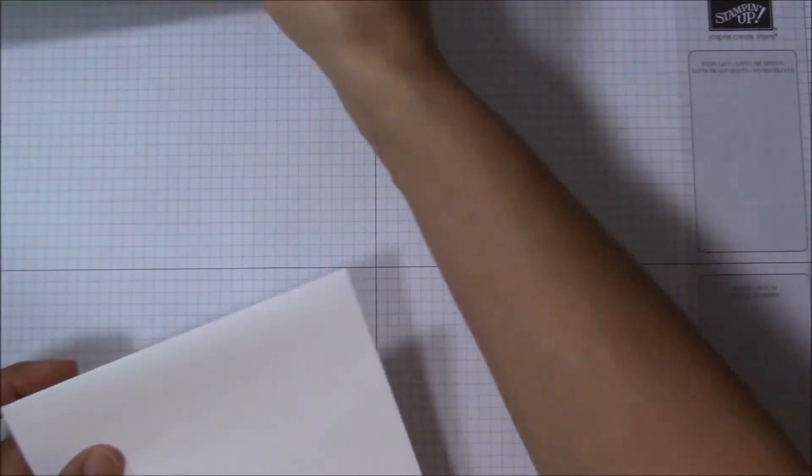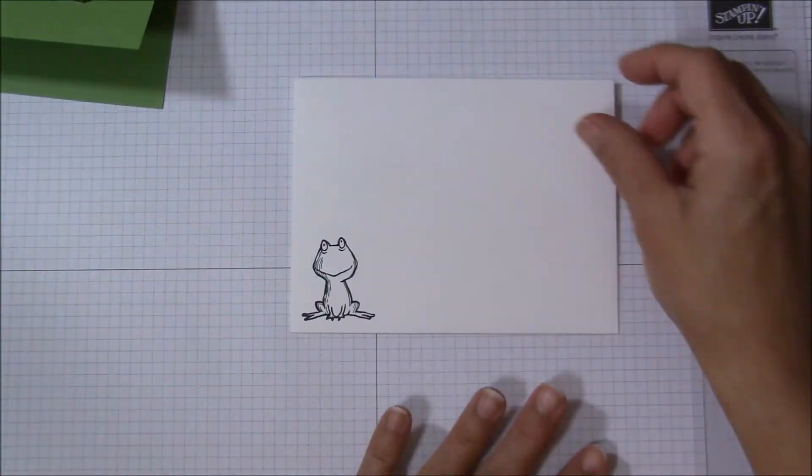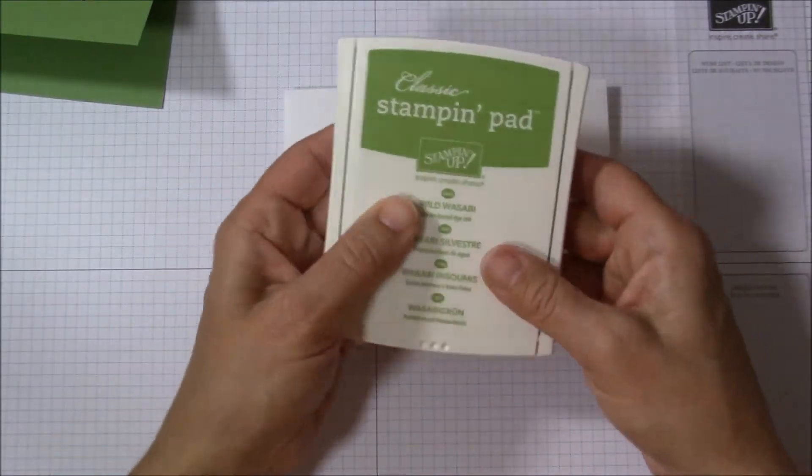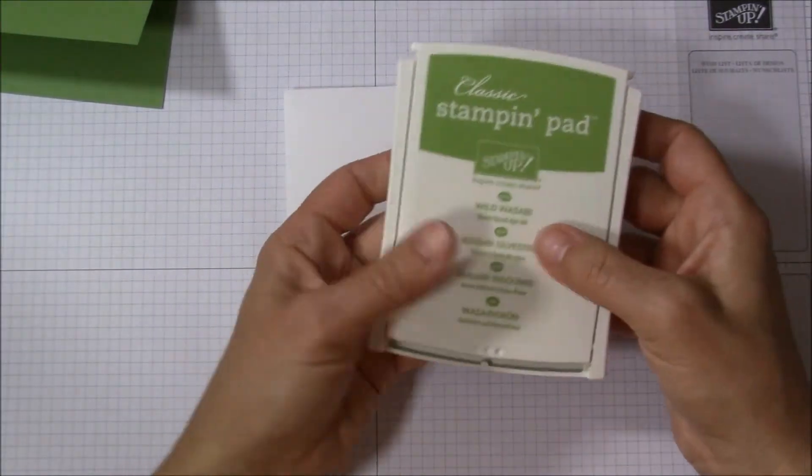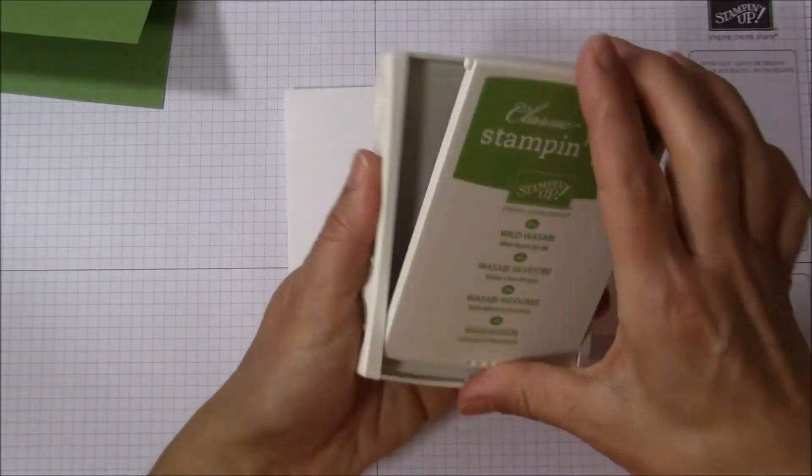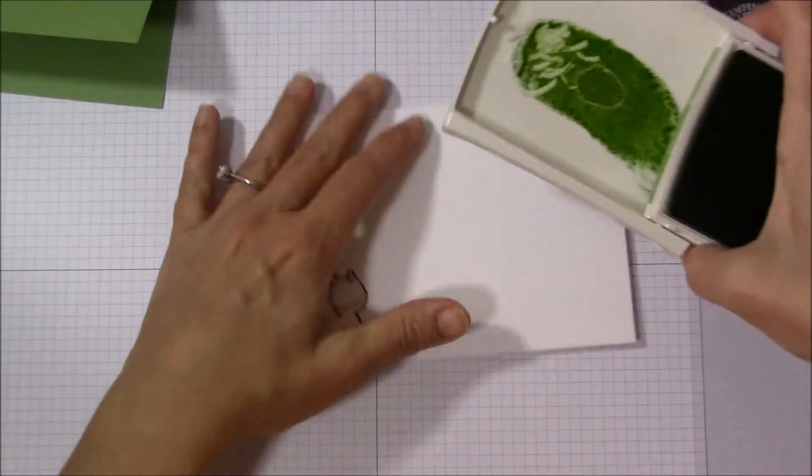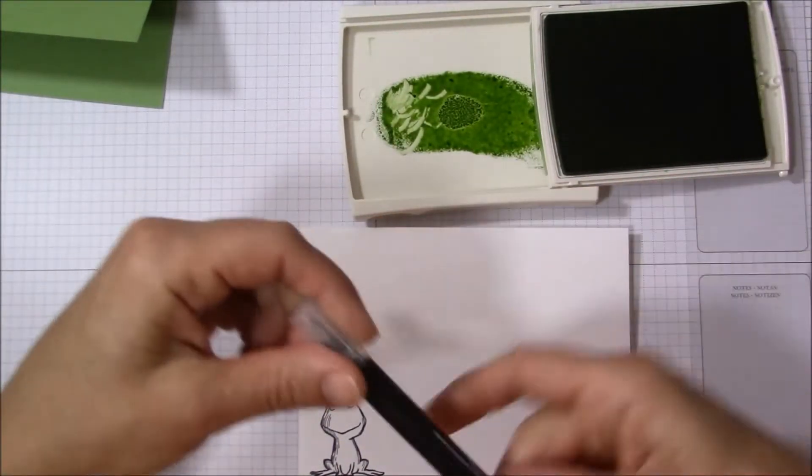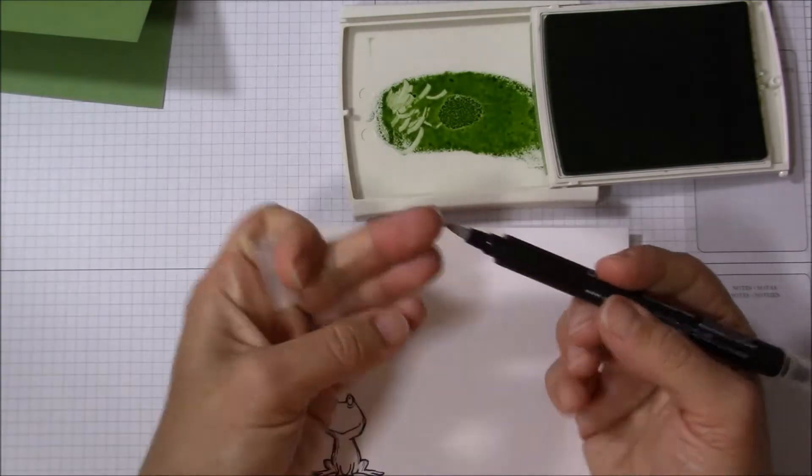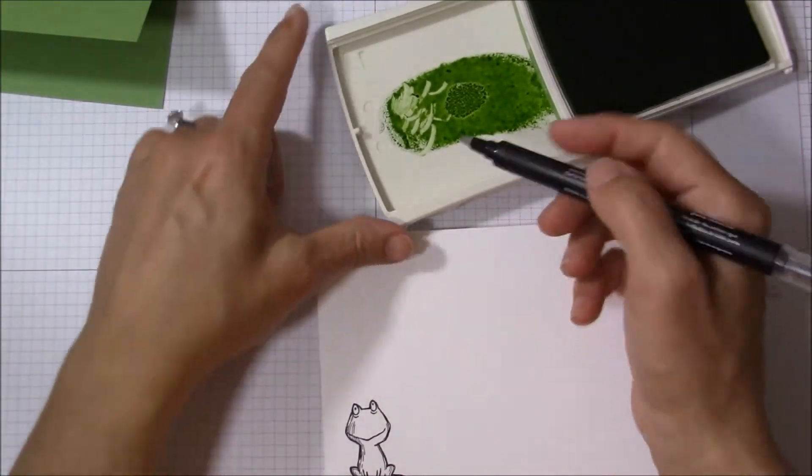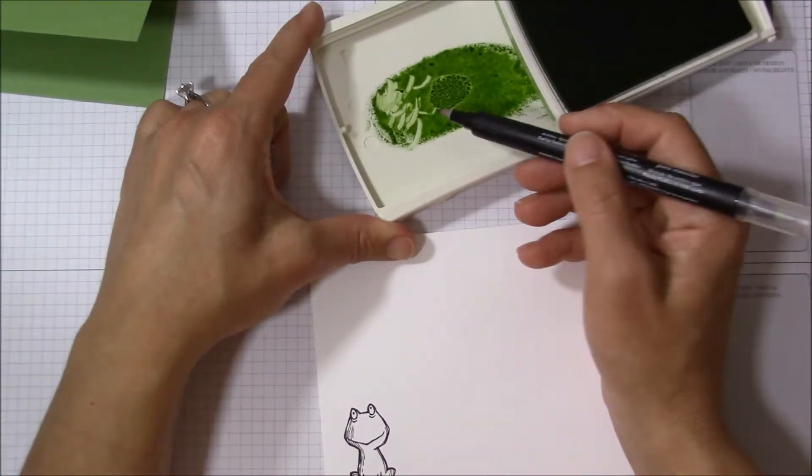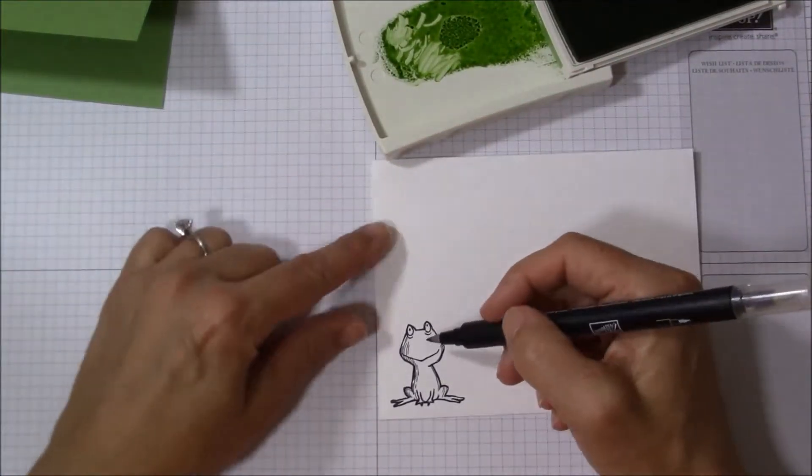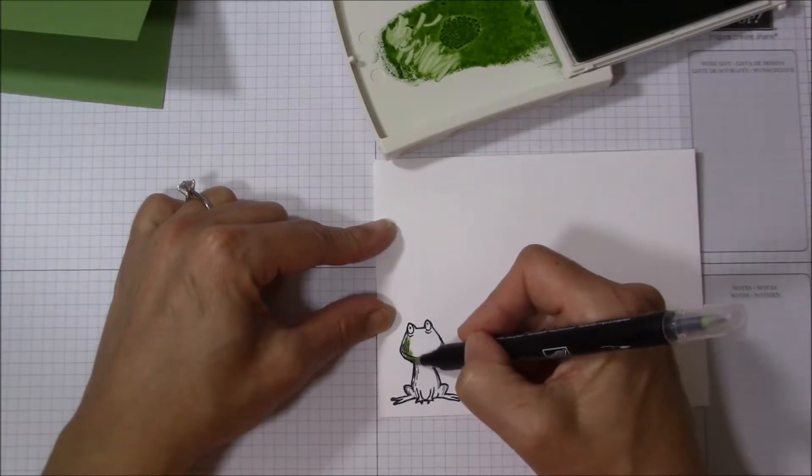And now let me show you how to color in the frog using the wild wasabi ink. So what you'll do is you'll open up your pad a little bit, you'll gently press the pad onto the lid to create a little palette of ink for you to use. So this is basically just like a water pen but just not a lot of water. So you'll take the tip and you'll just pull in some ink and just start coloring in your frog.